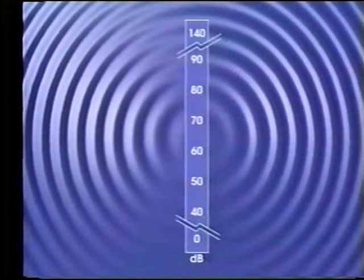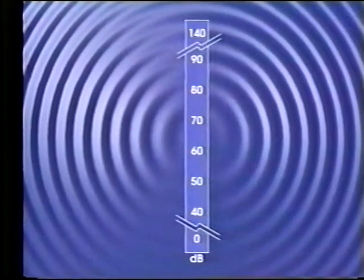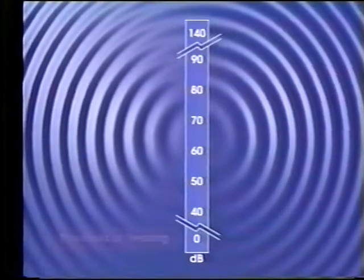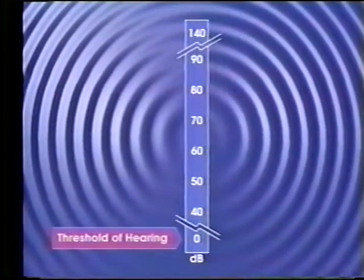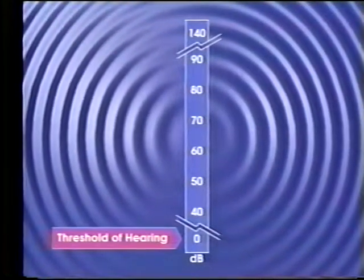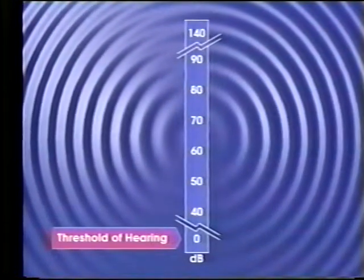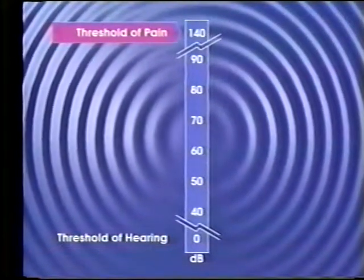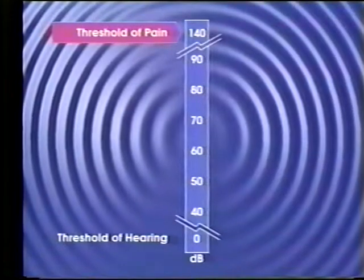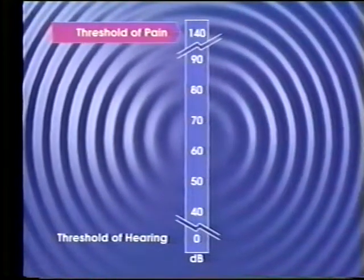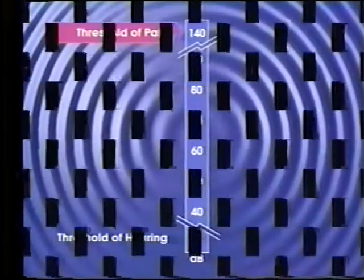A value of zero decibels is equal to a pressure fluctuation of 20 micropascal and corresponds to the threshold of hearing for most humans. A value of 140 decibels is equal to a pressure fluctuation of 20 million micropascal, which is the threshold of pain for most humans. Following are sounds encountered in daily life and their approximate decibel values, so that you can begin to equate numbers with actual sources.